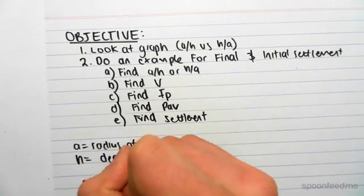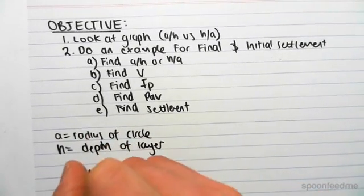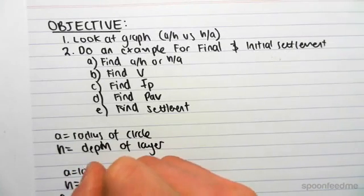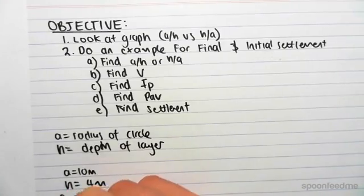Say if we had a radius of 10 meters and h, a depth of 4 meters. If we were to work out a on h, so a on h would equal 10 on 4, which would be 2.5, whereas h on a would equal 4 on 10, which is 0.4.